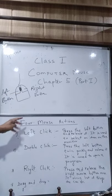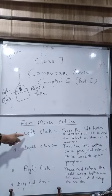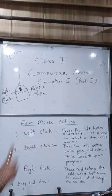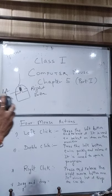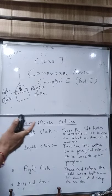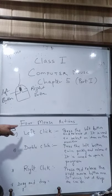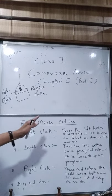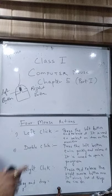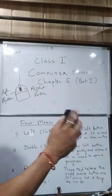There are four mouse actions. The first one is left click. When you press the left button of the mouse once and release it, that is called left click. What's the use of left clicking? It is used to select an item - item means an icon, folder, or file - whatever you see on the monitor.